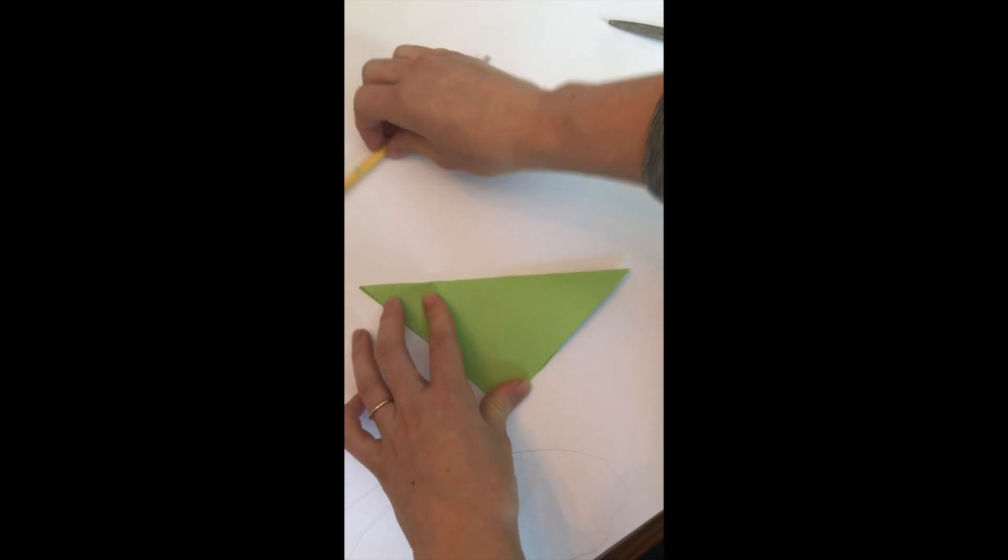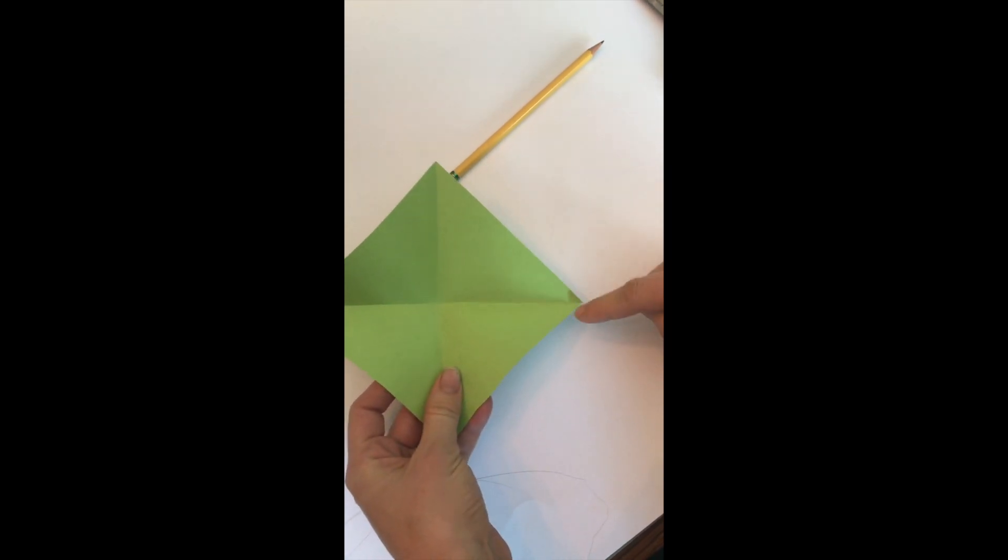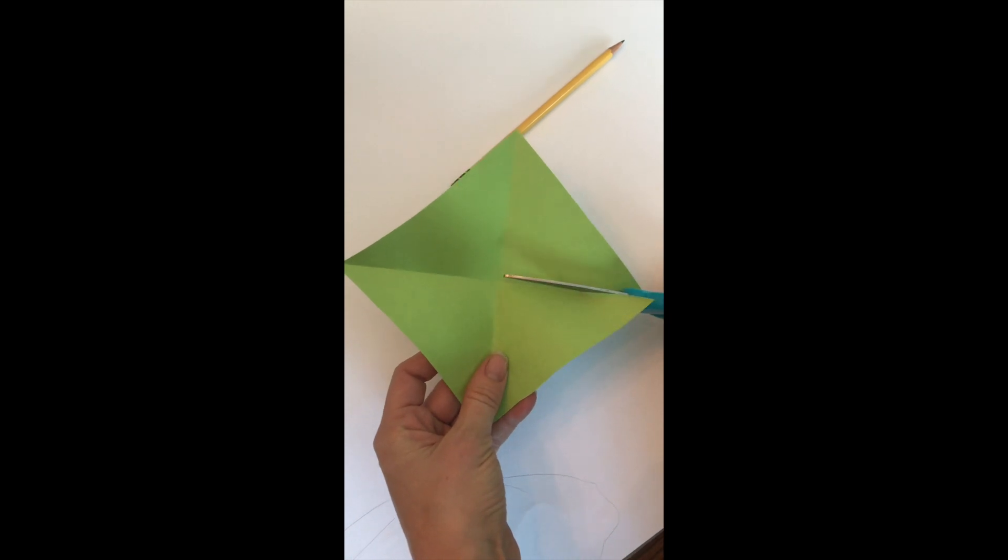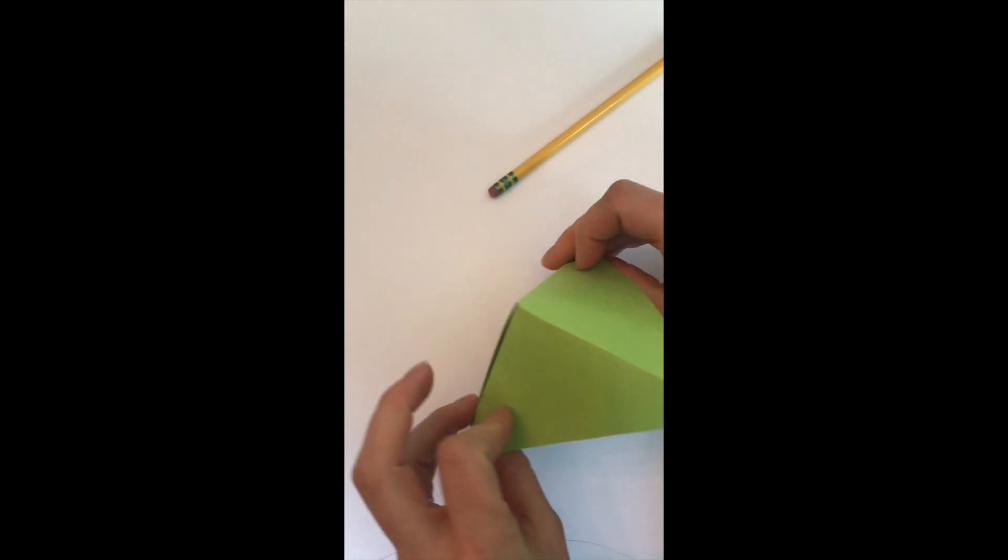I'm folding along the other side so that I have an X in the middle. I'm going to cut right to the intersection of that X one little snip from the corner to the middle and when I overlap it creates the prism.